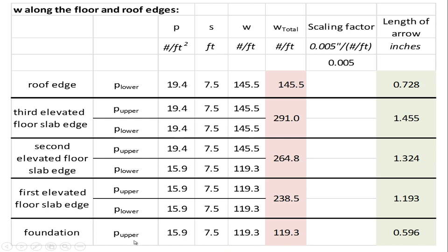Now we come down to the foundation. It's only supporting seven and a half feet because it only has to support wind load up to that point. So we only have this one contribution from the wall above, which is 15.9 times 7.5 and we get 119.3. And since there are not two components, the total will just be that 119.3. If we wanted to depict this graphically with some kind of scale on the arrows, such as .005 inches per pound per foot, this would be the length of the arrows that we would draw it to.